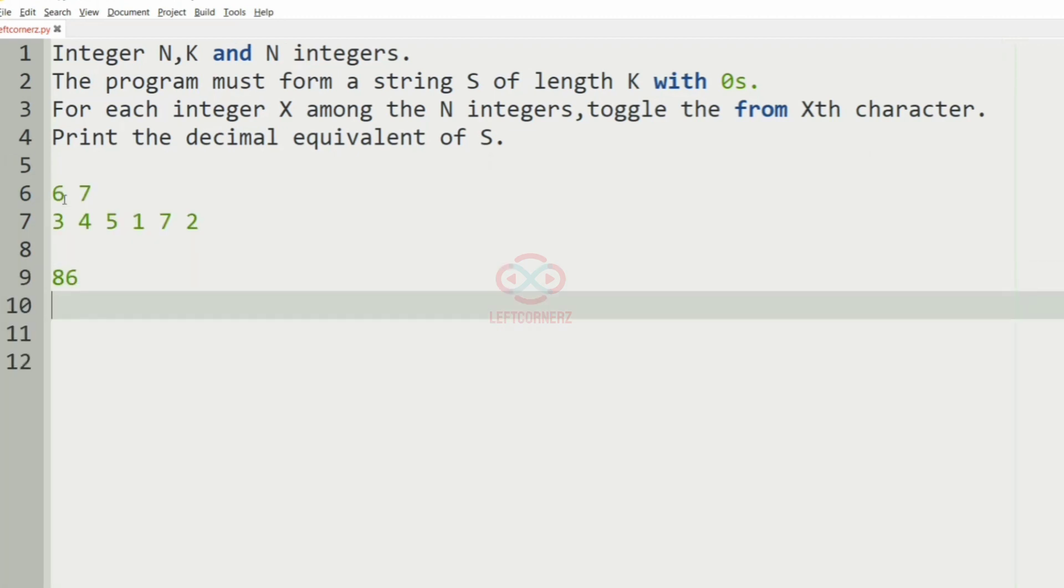So here the k is 7 and the string S. First we'll have seven zeros.